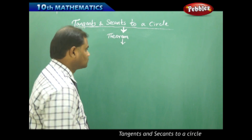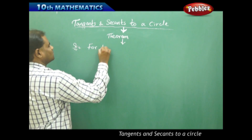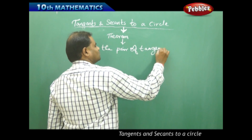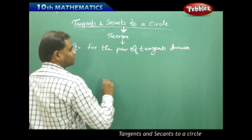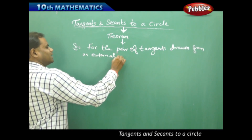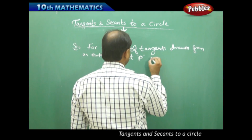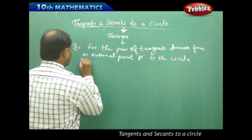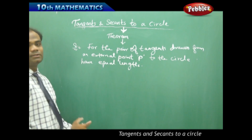The theorem exclusively says that the pair of tangents drawn from an external point P — external meaning outside the circle — to the circle have equal lengths. That is the statement.